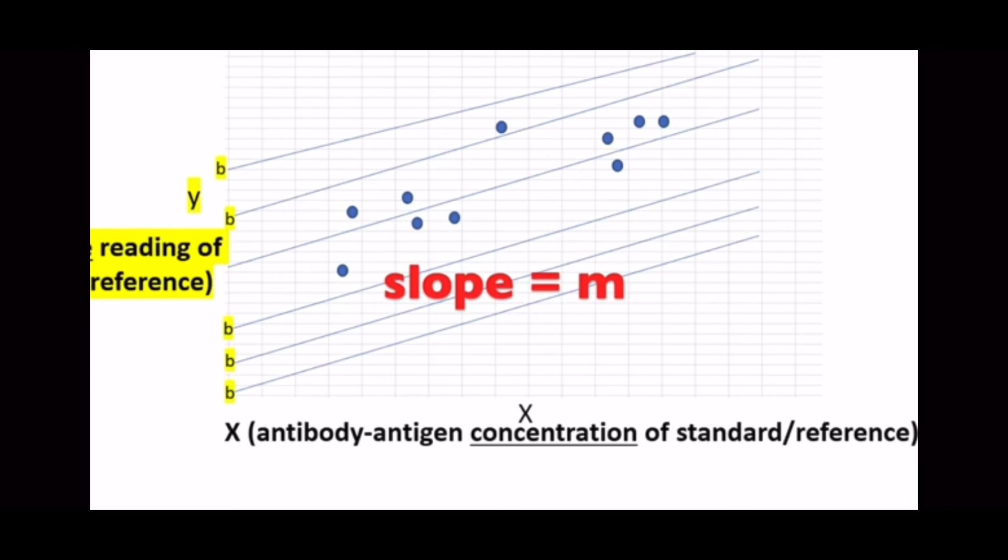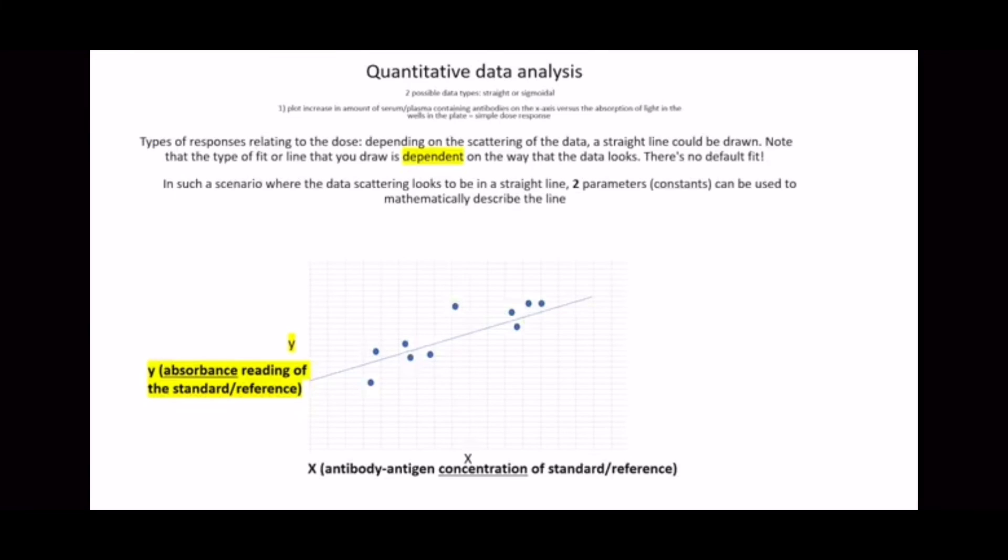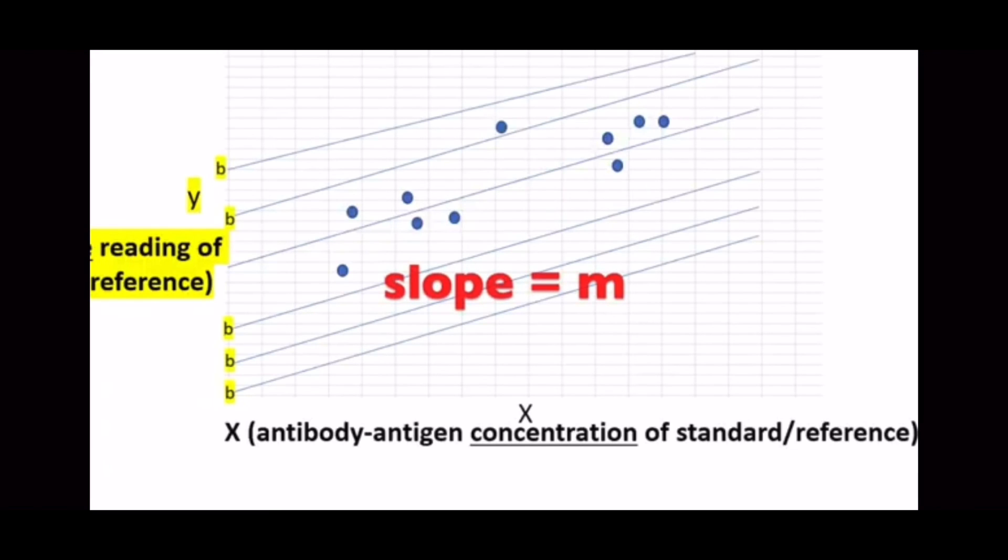You take the intercept of that slope where it hits the y-axis, and on this plot you can see I've indicated it with the letter b, and you can see that I've shown multiple b's depending on, you know, what the slope would be. The slope is given the alphabet m. And so basically, to determine the limit of detection, you're going to depend on where your b hits. You're going to take that and three times the standard deviation of that. You'll be able to come down and read what the concentration is, and that would be your limit of detection. And of course, ten times the concentration of that would be your limit of quantitation.